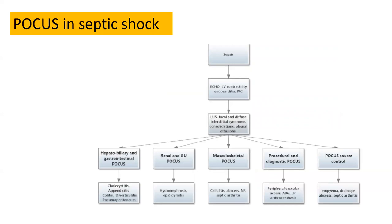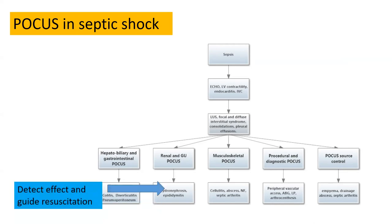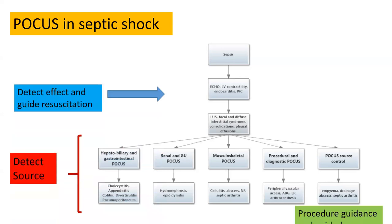When you have a patient in septic shock, use point of care ultrasound first to assess the dominant shock pathophysiology. Subsequently, use it for isolation of the focus of sepsis: a GI or hepatobiliary scan to identify cholecystitis, appendicitis, or diverticulitis; identify hydronephrosis or pyonephrosis; identify cellulitis, abscess, or septic arthritis and drain them. Subsequently, use POCUS for procedures like central line, arterial line, and LP placement. You can also detect the effect and guide resuscitation as well.